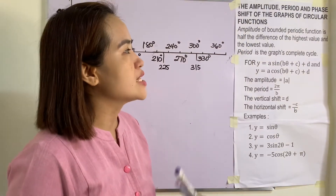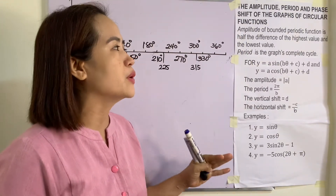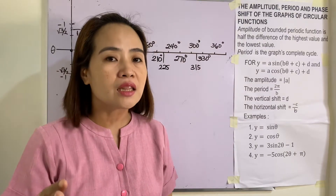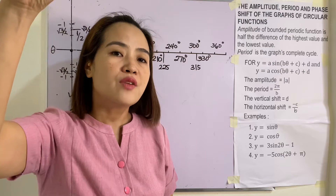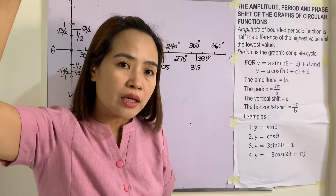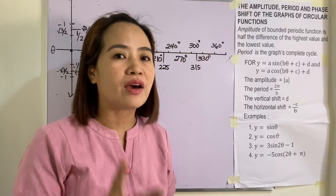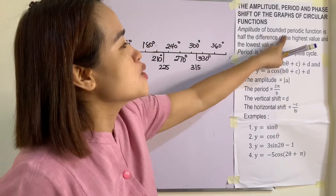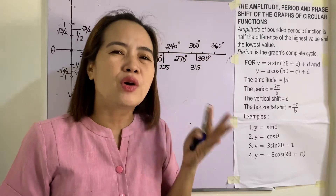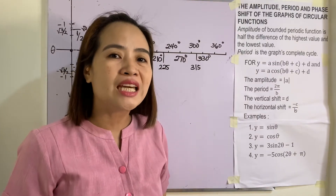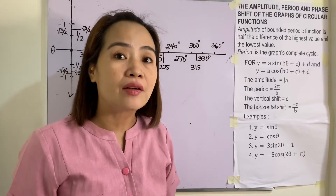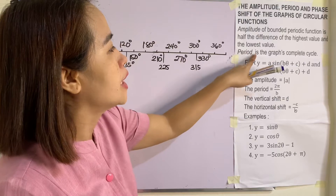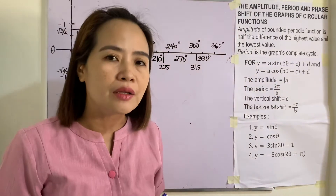The amplitude of a bounded periodic function is half the difference of the highest value and the lowest value. So we get the difference of the highest point and the lowest point and divide it by two — that's the amplitude. A periodic function is one where the graph keeps repeating its cycle. The period is the graph's complete cycle.